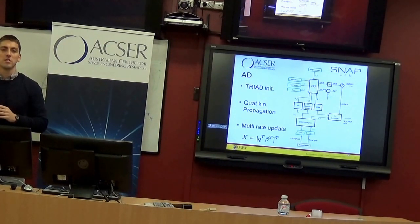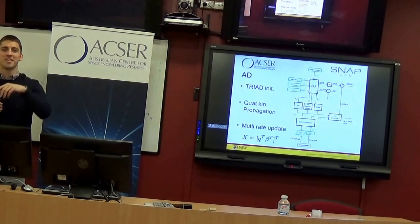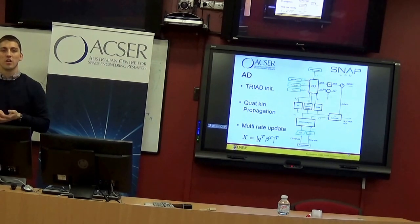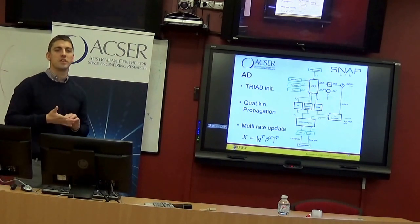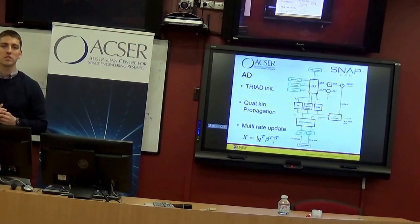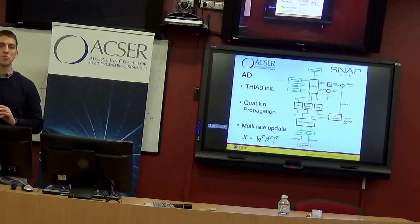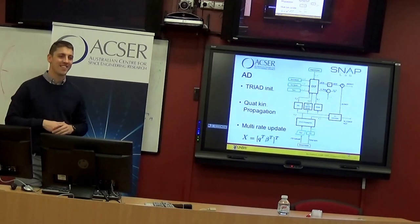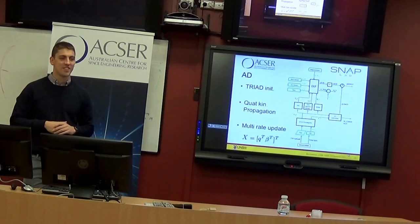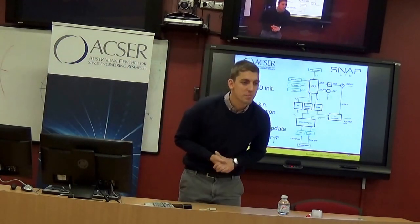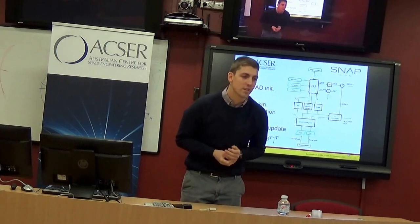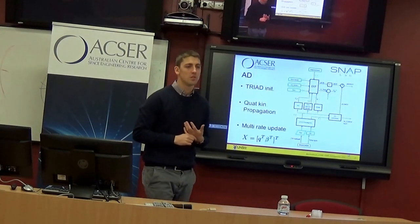Q: Which orbit are you planning? A: Deployed from the ISS — 400 km altitude, 52 degrees inclination, unless they give it a real kick. Q: The two-day convergence time — is that due to limited actuator torque? A: Yes, limited torque available. At 400 km we expect about 300 milligauss magnetic field — twenty times less than on the bench — so roughly 400 times the detumbling time.